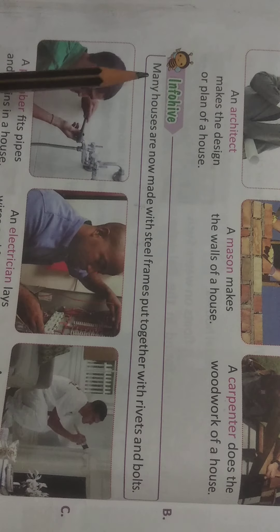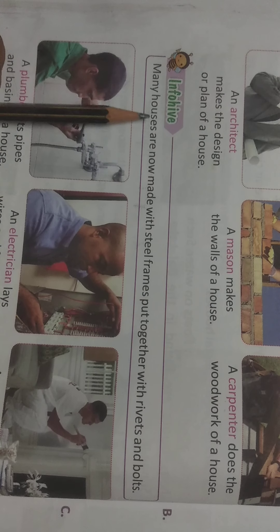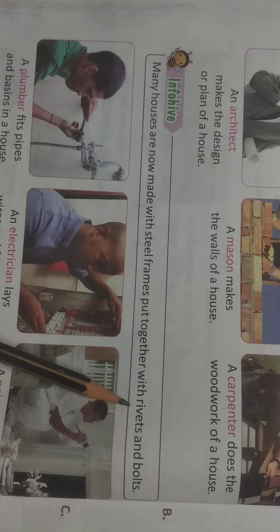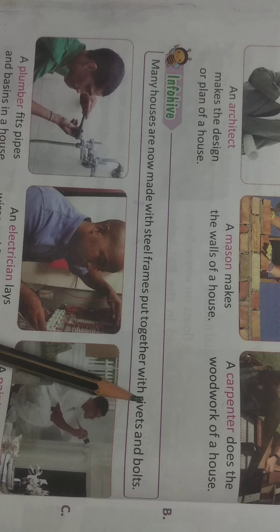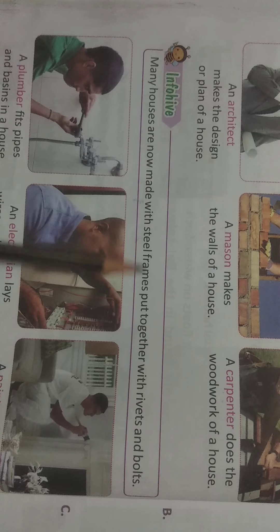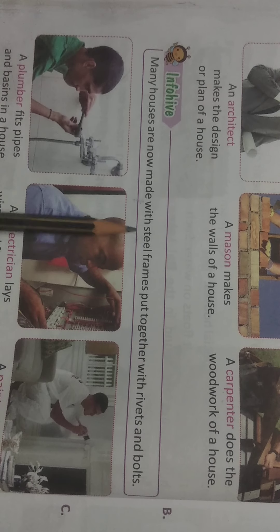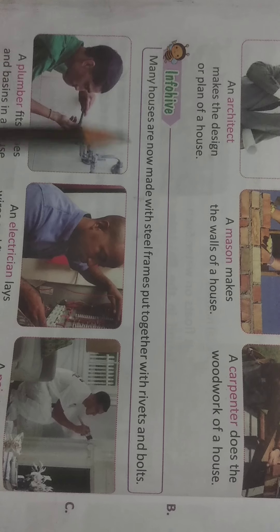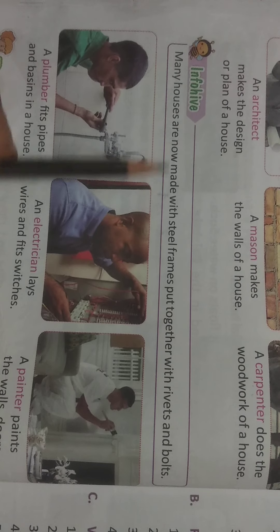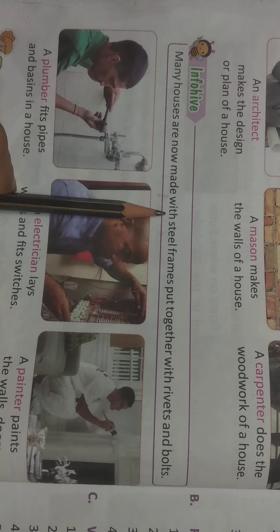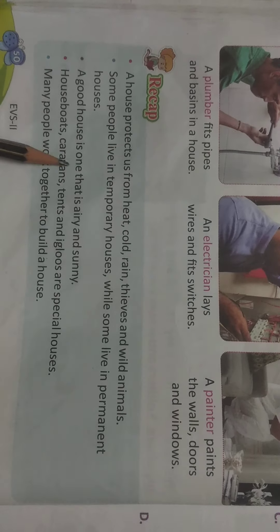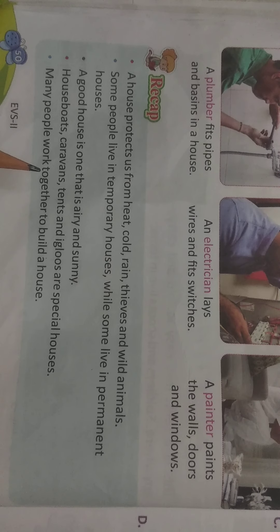Now look at this info box: many houses are now made with steel frames put together with rivets - meaning 'keel' in Hindi - and bolts. With the help of rivets and bolts, steel frames are joined together to build houses nowadays. Steel doors, steel windows, and steel frames are all being used now.